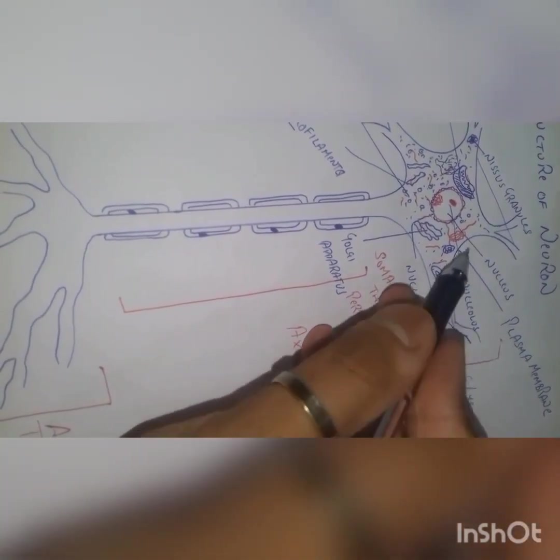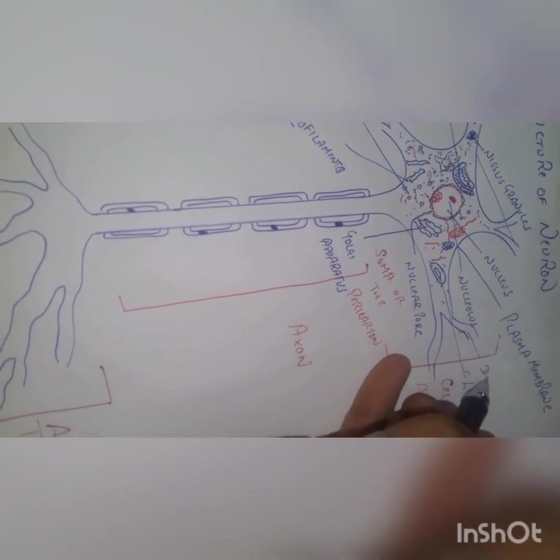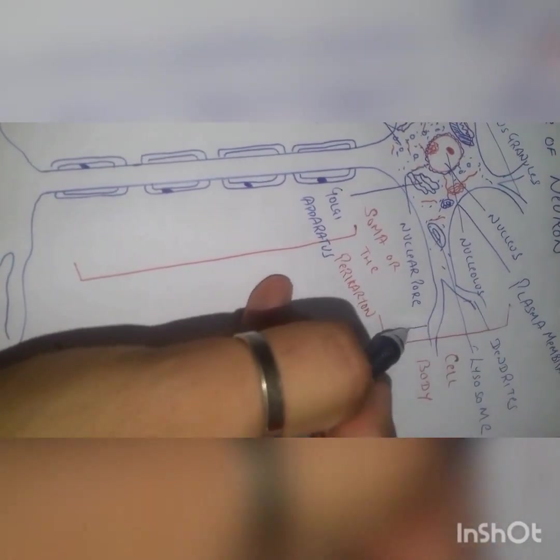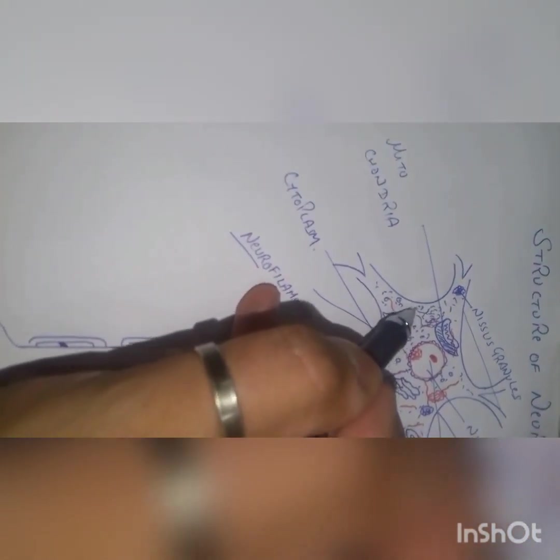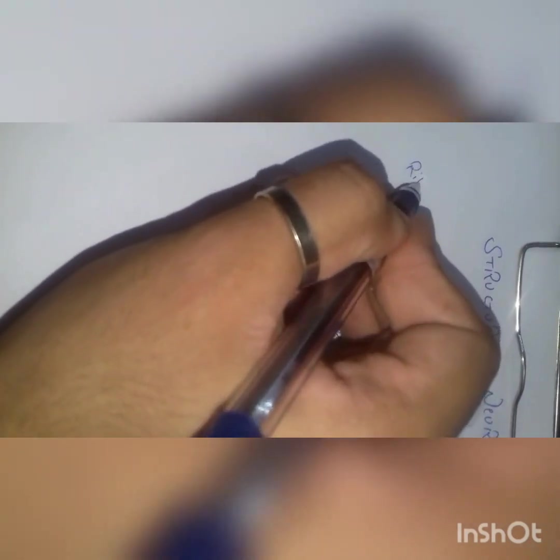This rounded structure is called the lysosome. These elongated structures projecting out of the cell body are called dendrites, and a small elevation on a dendrite is called the dendritic spine. We will study later that the dendritic spine is helpful in making the synapse. Some granules present in the cytoplasm are small ribosomes.